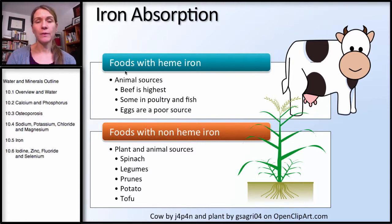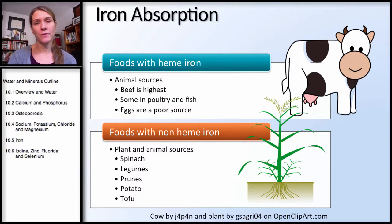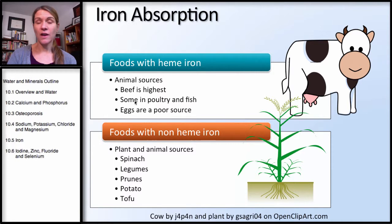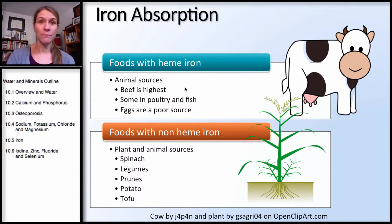Foods with heme iron are animal sources, since animals have hemoglobin and red blood cells. The highest sources of heme iron — which is more absorbable — are found in beef. There is also iron in poultry and fish, though not in as great amounts as beef. You also find it in oysters, though that's not a common food. Eggs, even though they're an animal source, are actually a poor source: there's not a lot of iron and it's not well absorbed.